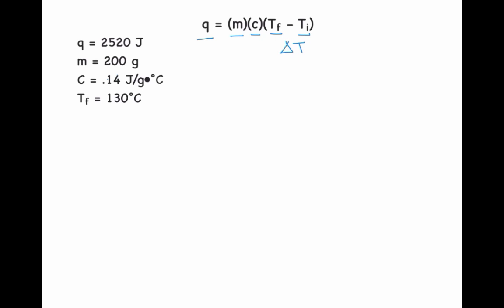I have the initial values given to me from the beginning of the question, and now what I'm going to do is substitute them in. So my Q is 2,520 joules, my mass is 200 grams, my specific heat capacity of mercury is 0.14 joules per gram degree Celsius, and then I have my temperature final. So temperature final is going to be 130 degrees Celsius minus my temperature initial. And this here is what I'm going to be solving for.